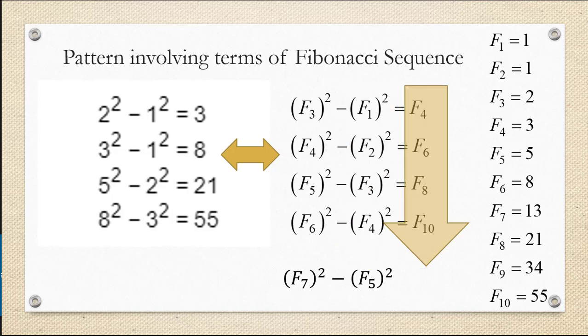And then on the right, we have F sub 4, F sub 6, F sub 8, and F sub 10. We seem to be skipping every other term in the Fibonacci sequence. So it makes sense that in the next equation in the pattern, we would have equals F sub 12.